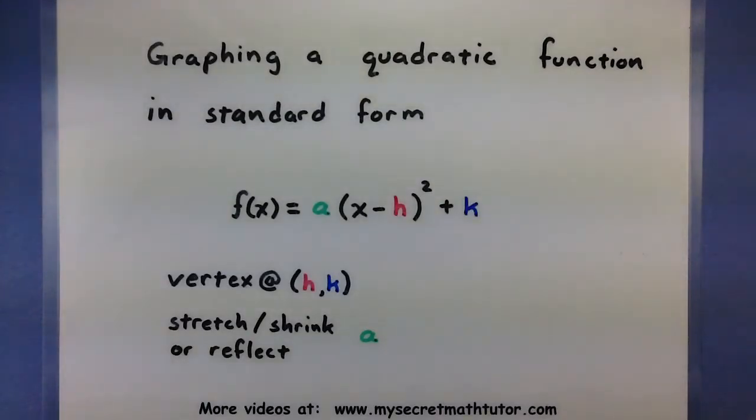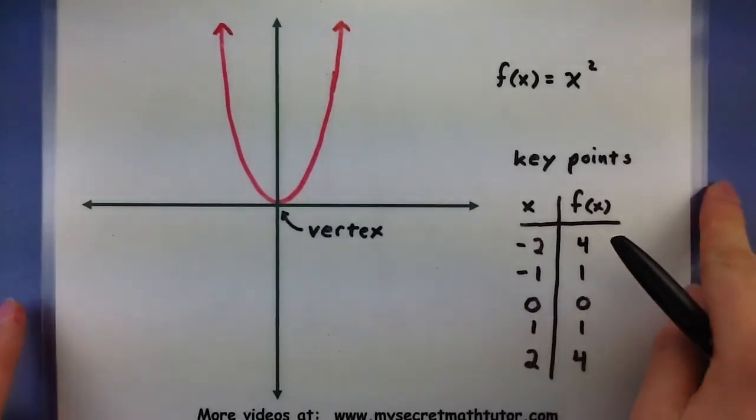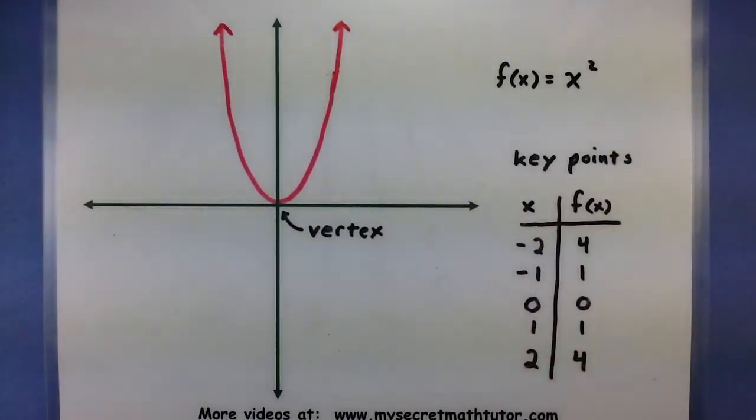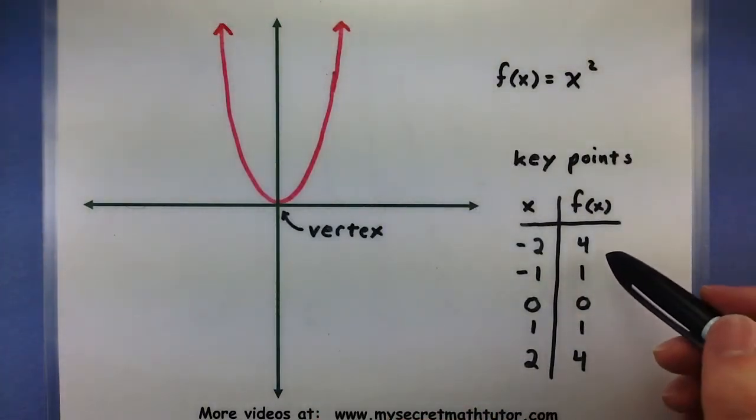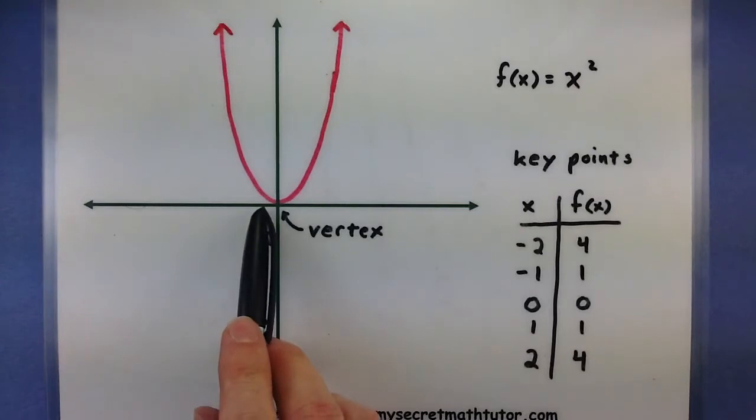So the big idea behind this is really to maybe think of our original x squared and to think of all of our quadratics as some sort of variation on this original function. So some things you want to know about just plain old x squared, well its vertex is usually at 0,0, and it has some key points like at negative 1,1, negative 2,4, stuff like that.